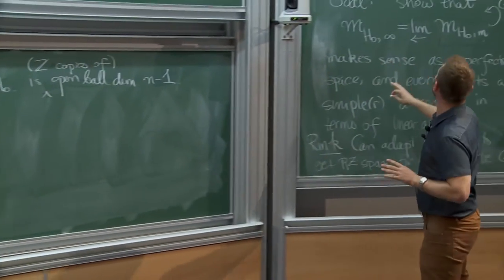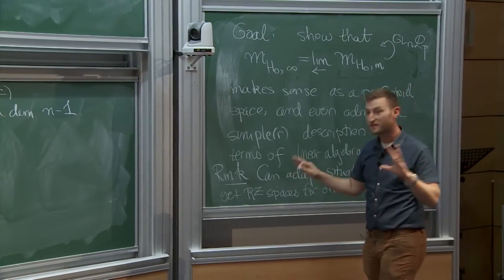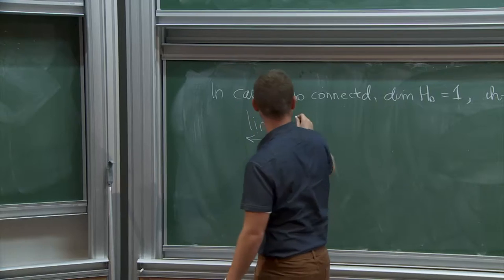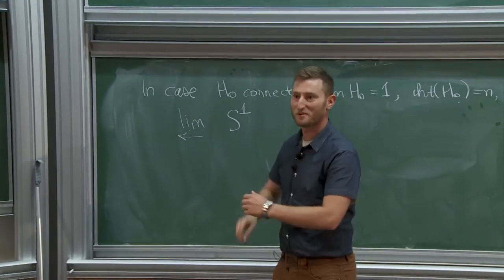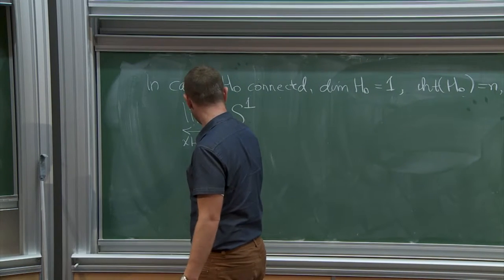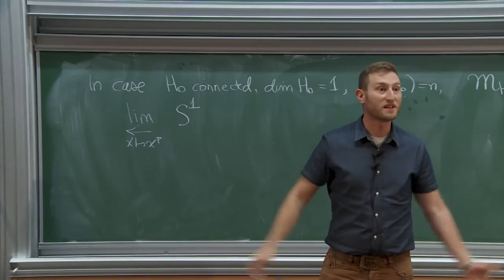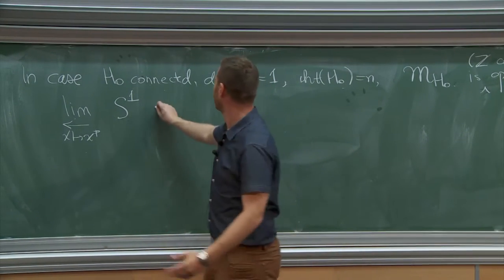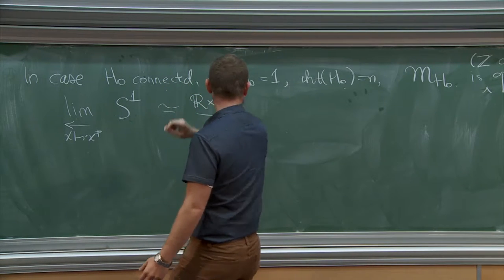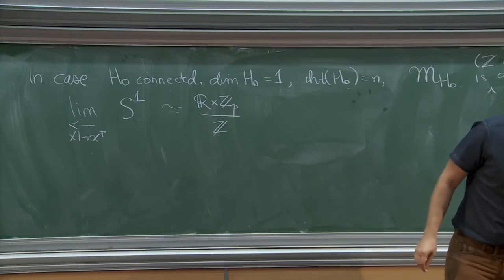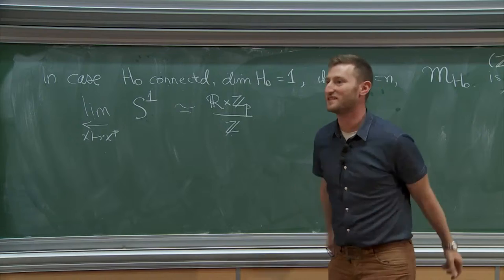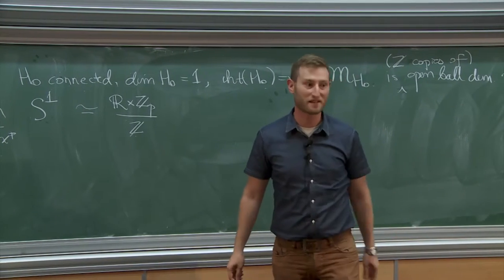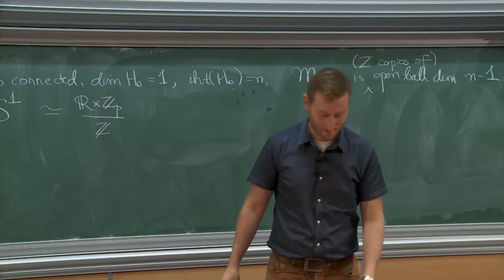A neighborhood of a point, no matter how small, doesn't look like anything reasonable — it still has this fractal nature to it. In a rather similar vein, you expect M(H₀,∞) to have a fractal nature to it. That's what perfectoid spaces look like — they don't have tangent spaces. The question about the tangent bundle at the top of this tower: it doesn't really make sense. It has to be zero, if anything.